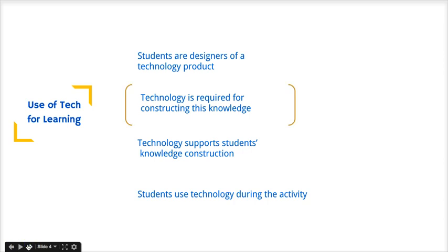As you move up to the third element, the word 'supports' is now replaced with the word 'required.' The goal would be to reach the top of the matrix, in which all of the previous three elements would be met. Here you see that the students are designers of a technology product — they are using technology to design a product that helps share their knowledge. If you can answer yes to all four of these criteria, then you have done an excellent job at leveraging and allowing students the opportunity to use technology for learning.